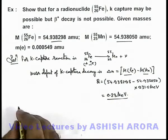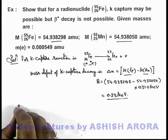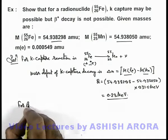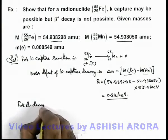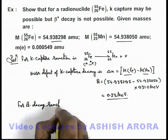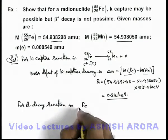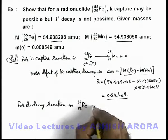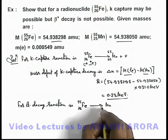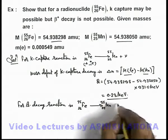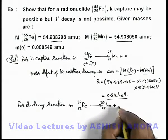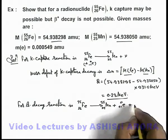Similarly, for beta-plus decay, the reaction is: iron-55 (26, 55) decays to manganese-55 (25, 55) plus a beta-plus particle is emitted along with a neutrino.